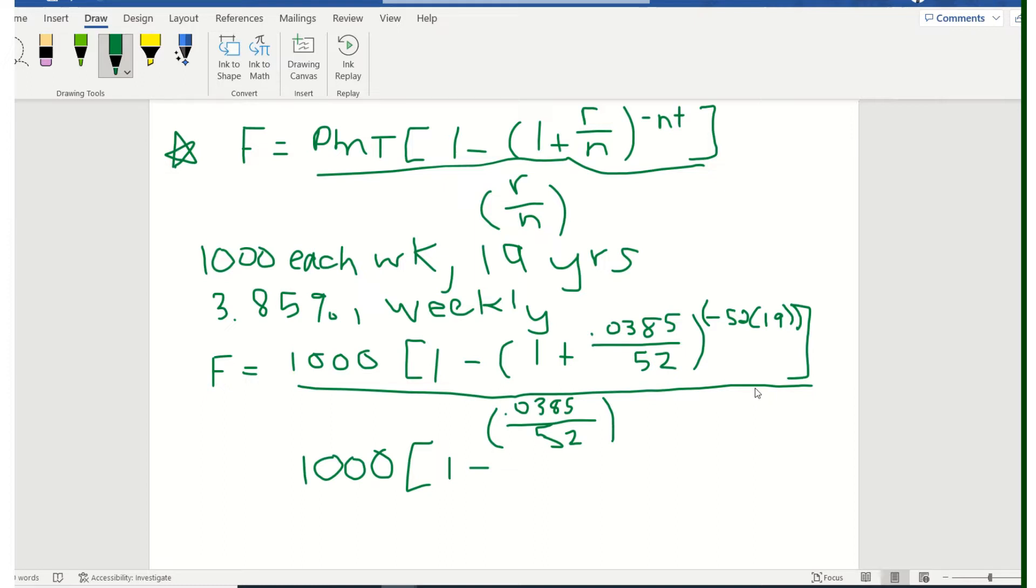So I'm just doing the 1 plus 0.0385 divided by 52 raised to the parentheses negative 52 times 19 power. And you might want to check yourself just to see if you are getting things correctly. And I am going to take this out quite a few decimal places, because if we don't, we can get into some real differences in our answers and what's in my OpenMath.